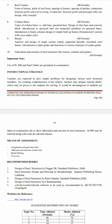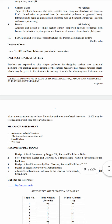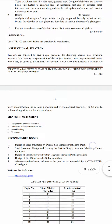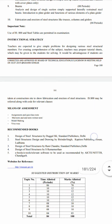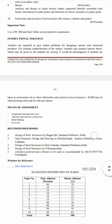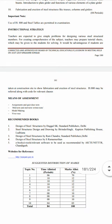Next is beams: analysis and design of single sections, simply supported laterally restrained steel beams, introduction to plate girders and the function of various elements of a plate girder. Tenth topic is fabrication and erection of steel structures like trusses, columns, and girders. Important note: IS 800 and the steel table are permitted for your examination.